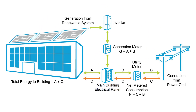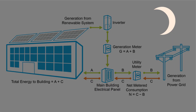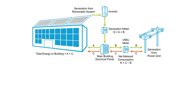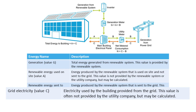Unless a building is completely off the grid, it is expected to consume at least some electricity from the grid in order to meet the building's needs during times when the building requires more electricity to operate than the on-site system can provide. For a solar photovoltaic system, this could mean nighttime operation, cloudy days, or hot days when the building's cooling load exceeds what the on-site system is able to generate. In our diagram, energy received from the grid is indicated as Flow C.